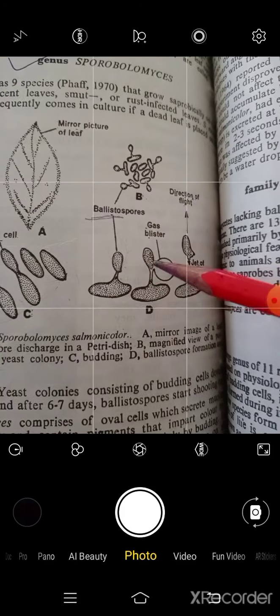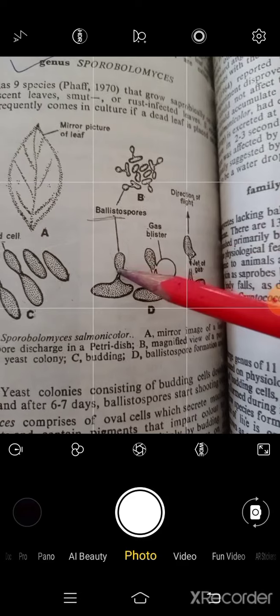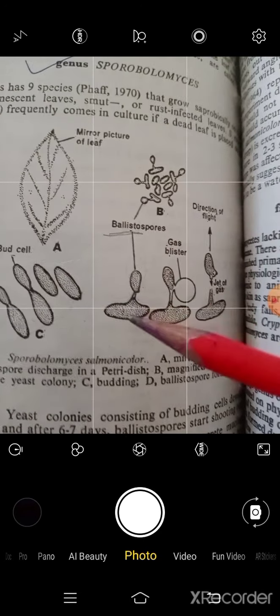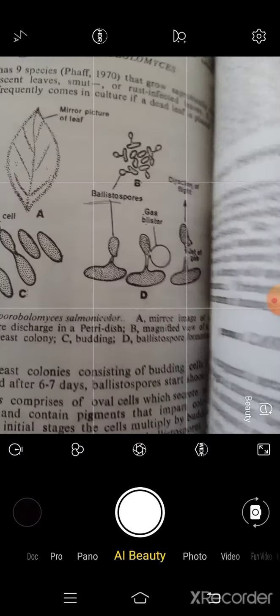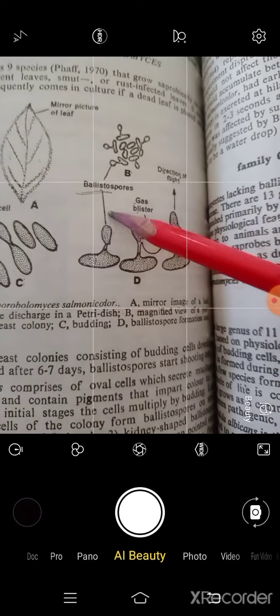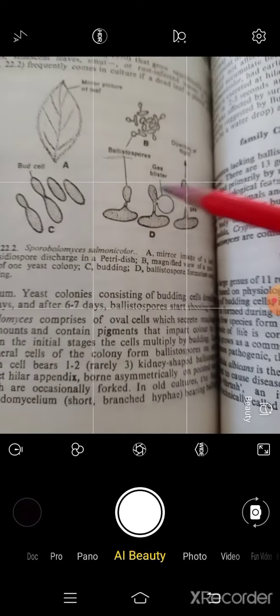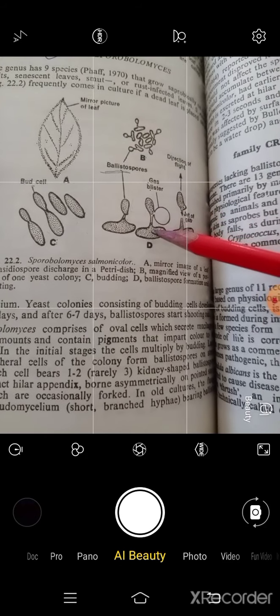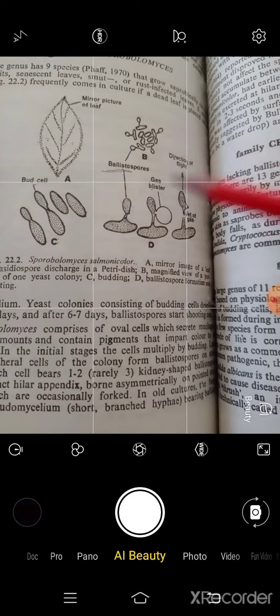This structure at which these blastospores are attached with the stigmata, that is called as stigmata. So stigmata has a gas blister which will give a jerk and these spores are released.